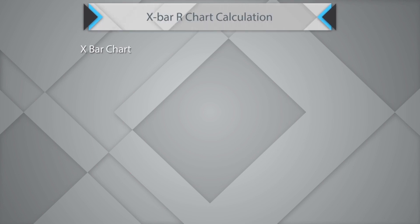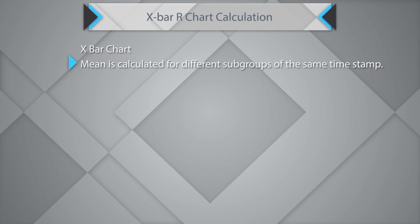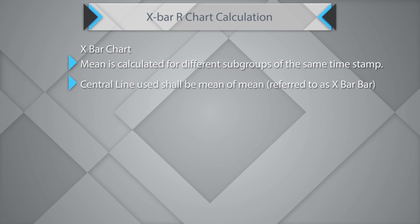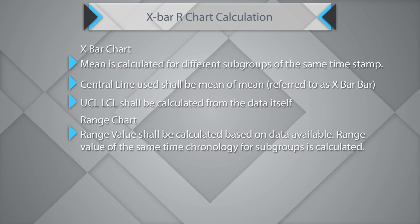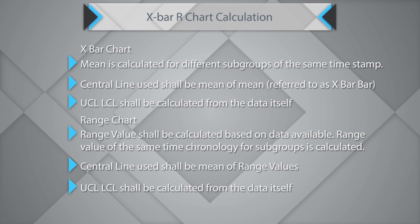When using the X-bar R chart, for the X-bar, mean shall be calculated for the different subgroups of the same timestamp. The central line shall be the mean of means, referred to as X-bar-bar, and the UCL/LCL shall be calculated from the data itself. For the range chart, range values shall be calculated based on the data available — specifically the range of the same time chronology for all subgroups. The central line in the range chart shall be the mean of the range values, and UCL and LCL shall be calculated from the data itself based on whatever tool you are using.